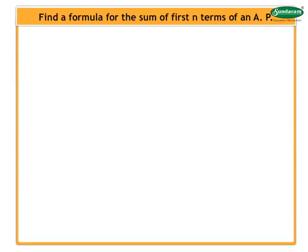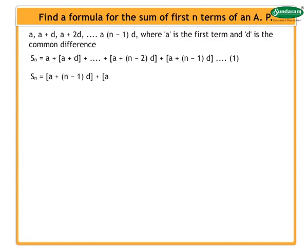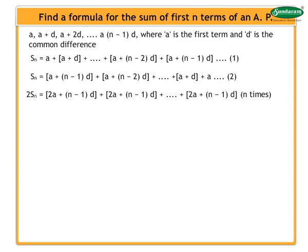Let us use Gauss's technique to find a formula for the sum of the first n terms of an AP. Consider an AP where A is the first term and D is the common difference. The sum of the first n terms of the AP is given here. Reversing the terms and rewriting the expression, we get as shown on the screen. Adding equations 1 and 2, we get 2Sn equal to n times [2a + (n−1)d].